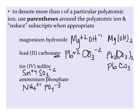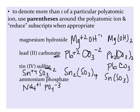In tin four sulfite, tin has a plus four charge, and sulfite with the -ite ending shows us it's a polyatomic ion. It's SO3 with a negative two charge. When we crisscross these charges, we get Sn2(SO3)4. This again is not the simplest ratio of ions in the compound. We have a two to four ratio. We can simplify that to Sn(SO3)2.